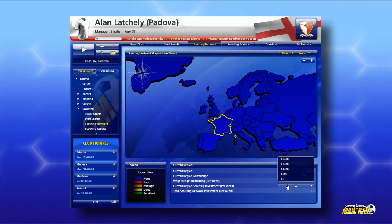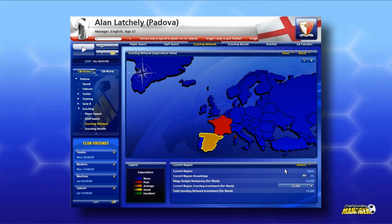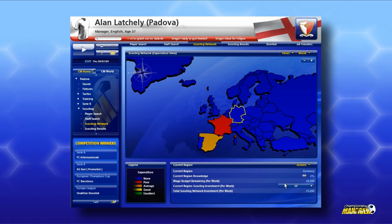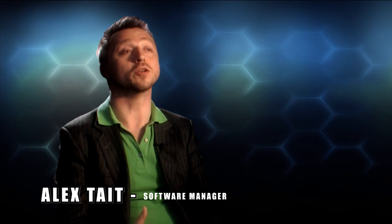With the Scouting Network we set up within the game, you can start to invest money into building up a picture of local players within just about every country in the world. And you invest money. That money comes out of your wage structure. So it's actually having an impact on the money you can pay players and the money you can use to sign them as well.